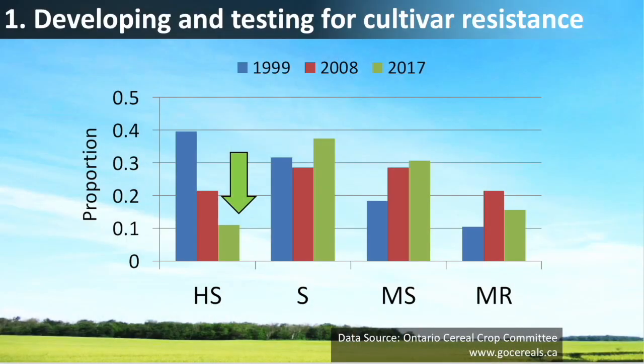Right then we knew we had to spend effort on developing strategies to manage Fusarium head blight and DON mycotoxin accumulation in wheat. In 1996 and 1997, 40% of cultivars were in the highly susceptible category, and less than 1% tested moderately resistant. But today, from 2017 to 2020, 40% of our cultivars are moderately resistant and only 10% are highly susceptible. The progress in plant breeding, thanks to plant breeders and the Ontario Cereal Crop Committee, has been tremendous.